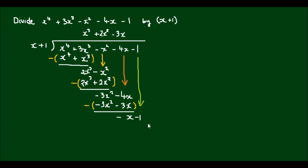And finally, what do I multiply by x to give negative x? And the answer is negative 1. So negative 1 times x will give me negative x. And negative 1 times 1 will give me negative 1. And again, this new line is subtracted from the line above it.